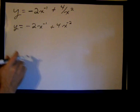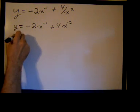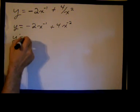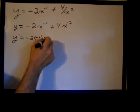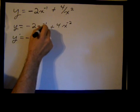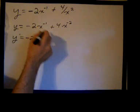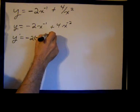Now we'll apply the power rule, so we'll get y prime. Bring the negative 1 down in front, so we have negative 2 times negative 1. Negative 1 minus 1, knocking the power down by 1, so negative 1 minus 1 is negative 2.